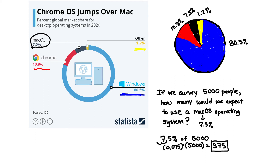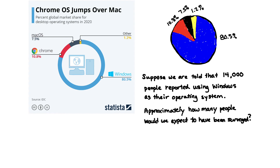Let's take a look at one final question related to our circle graph. Suppose now that we are told 14,000 people reported using Windows as their operating system. Approximately how many total people would we have expected to have been surveyed? It's a new survey, a new problem. From this survey, we are told that 14,000 people reported using Windows as their operating system. Based on that information, how many total people would we have expected to have been surveyed? This problem is similar to our last, but slightly different — the key is that 14,000 pertains only to the people using Windows, not the entire circle.